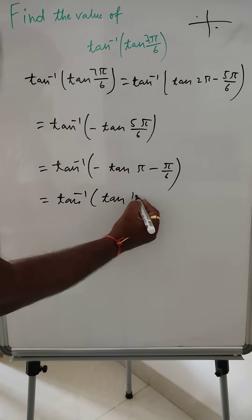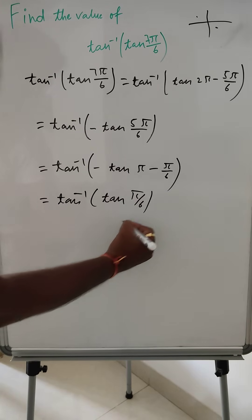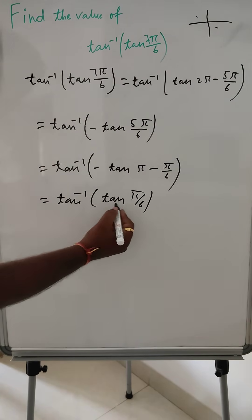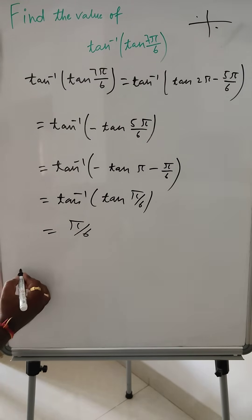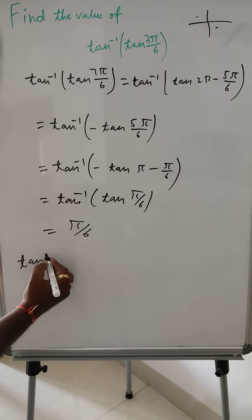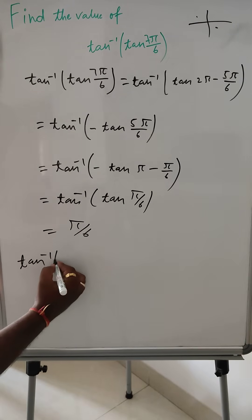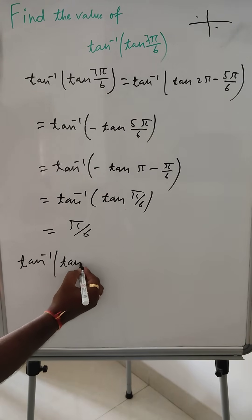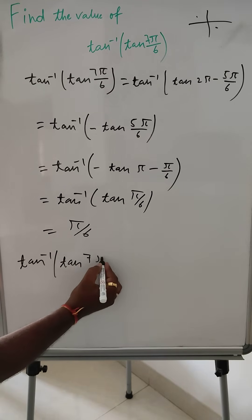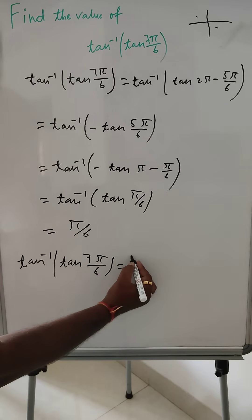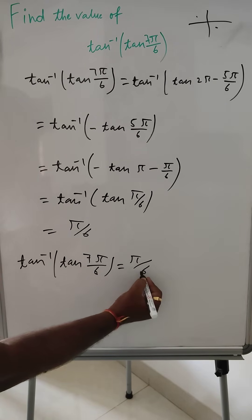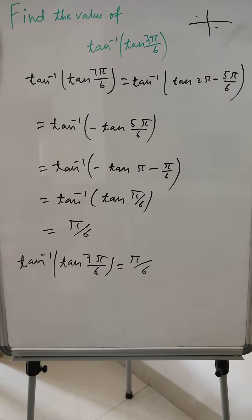This is an even multiple of 90, so there will be no change — tan remains the same, giving tan⁻¹(tan(π/6)). The tan and tan inverse cancel, so the final value of tan⁻¹(tan(7π/6)) is equal to π/6. Thank you for watching, please like and subscribe.